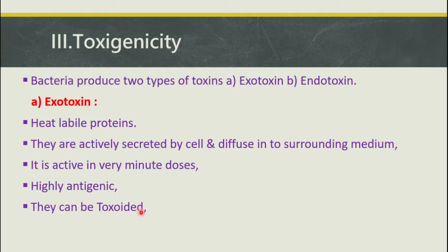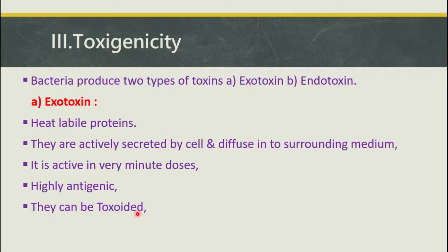Exotoxins can be toxoided. Toxin means it is harmful, but when the toxin is treated with a specific chemical agent it loses its virulence power while retaining its antigenicity — these are known as toxoids. So toxoids are antigenic but have lost their toxigenicity, and that is why they can be used for protecting against the toxigenic effects of these organisms.